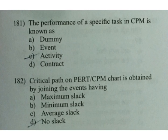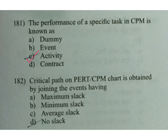The critical path on a PERT or CPM chart is obtained by joining the events having: A maximum slack, B minimum slack, C average slack, D no slack. D is the answer — but here the official answer is B. The correct answer is no slack, i.e., zero slack.